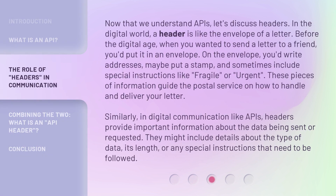Now that we understand APIs, let's discuss headers. In the digital world, a header is like the envelope of a letter. Before the digital age, when you wanted to send a letter to a friend, you'd put it in an envelope. On the envelope, you'd write addresses, maybe put a stamp, and sometimes include special instructions like fragile or urgent. These pieces of information guide the postal service on how to handle and deliver your letter. Similarly, in digital communication like APIs, headers provide important information about the data being sent or requested. They might include details about the type of data, its length, or any special instructions that need to be followed.